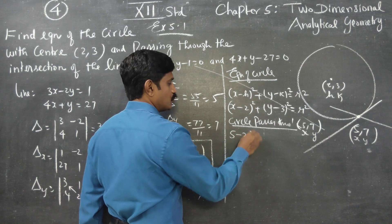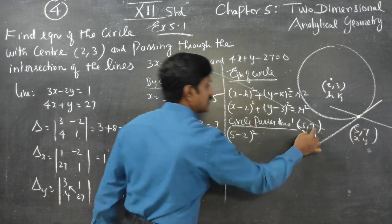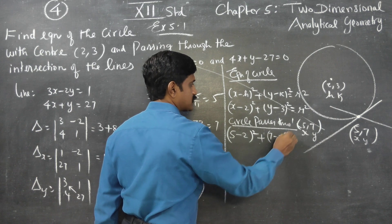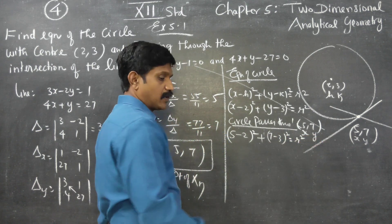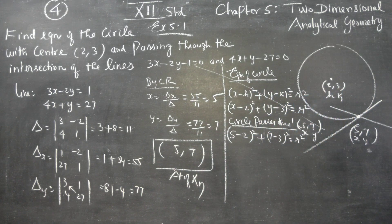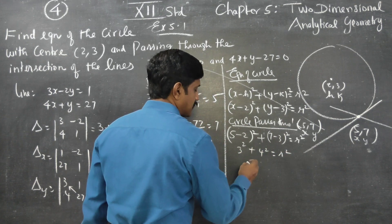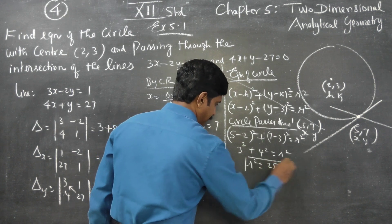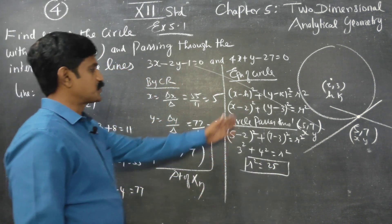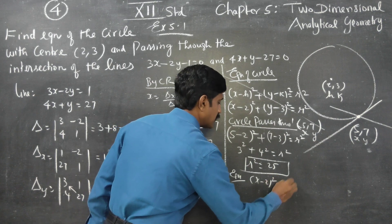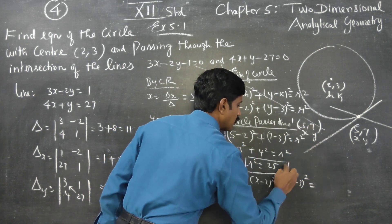So: (5 minus 2) squared plus (7 minus 3) squared equals r squared. That is 3 squared plus 4 squared equals r squared. This gives 9 plus 16 equals r squared. Therefore r squared equals 25. Now substitute r squared back into the equation: (x minus 2) squared plus (y minus 3) squared equals 25.